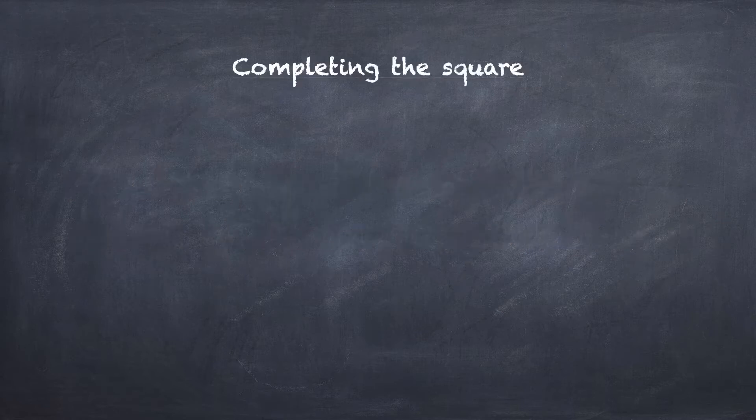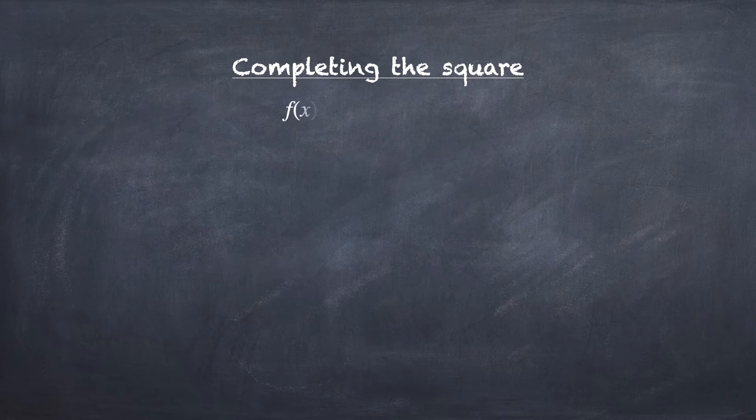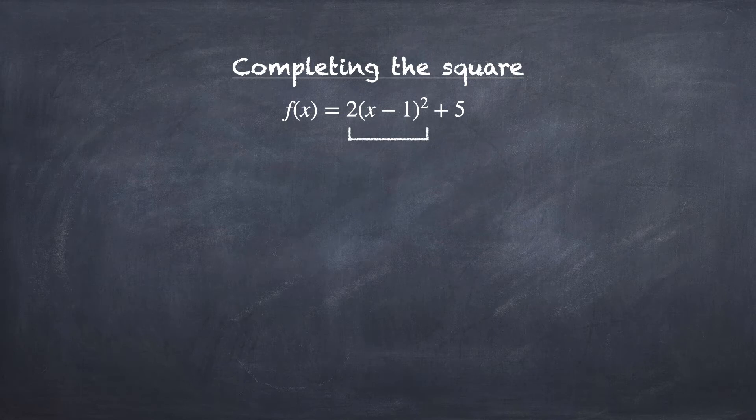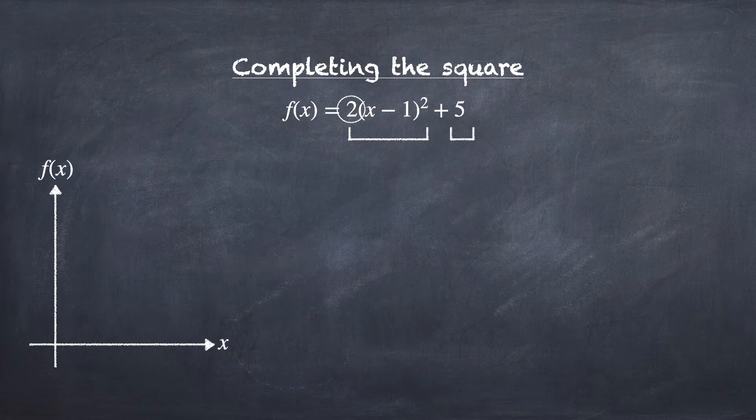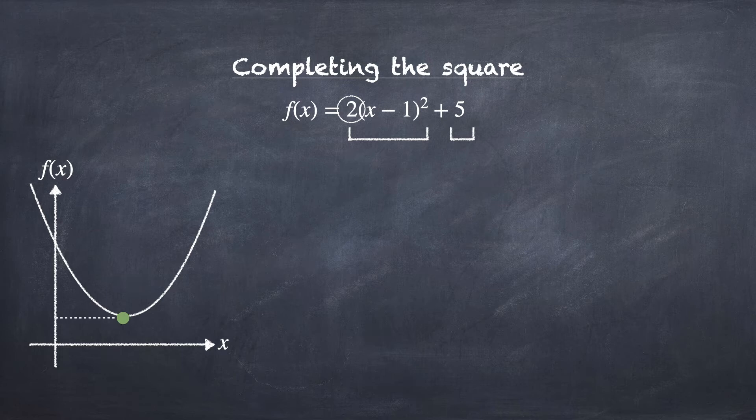Suppose we have a quadratic function in completing the square form f(x) equal to 2(x - 1)² + 5. Since the a is 2, this quadratic function will have a U-shaped curve with a minimum point. So, how do we find the minimum value of this curve?